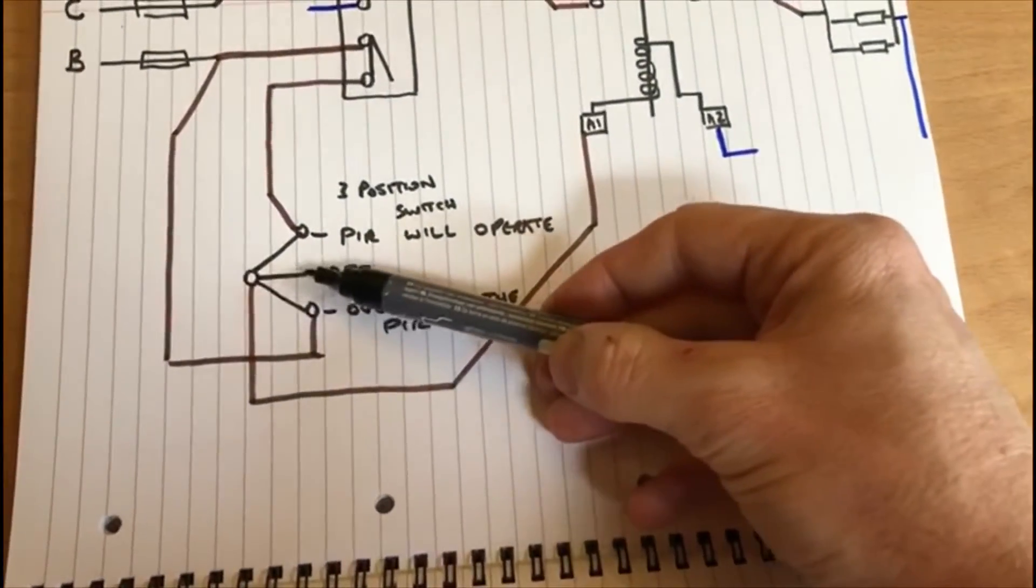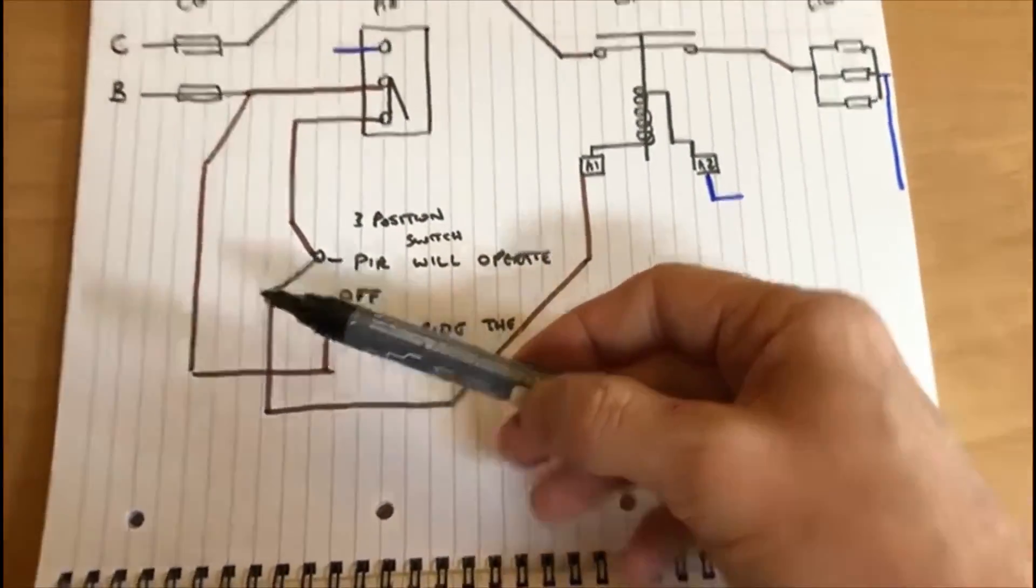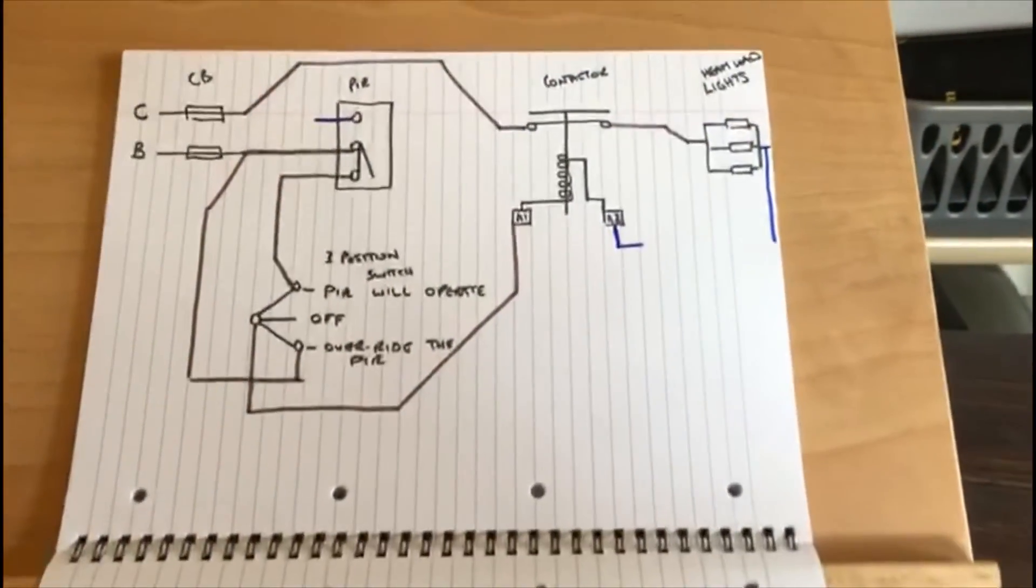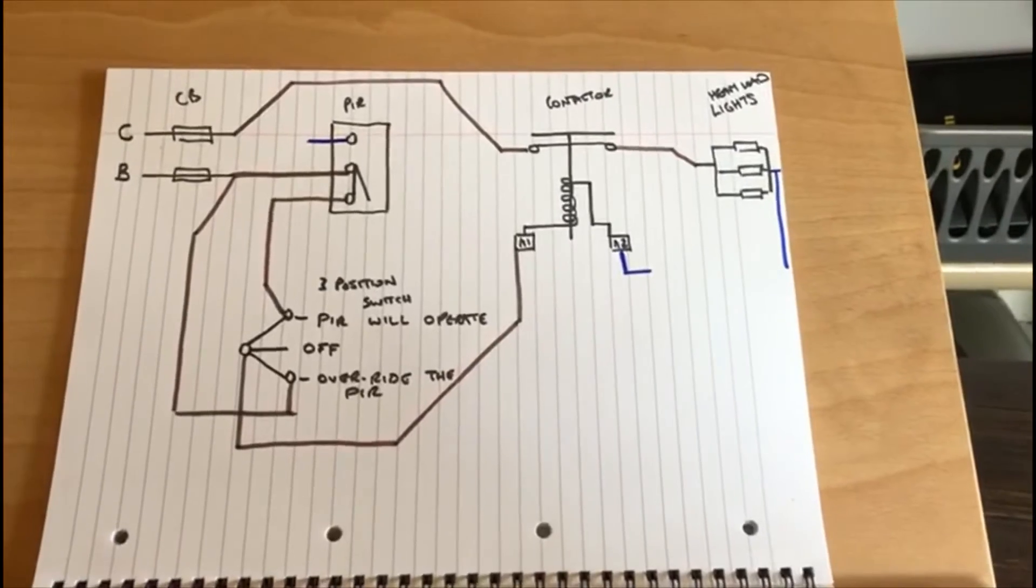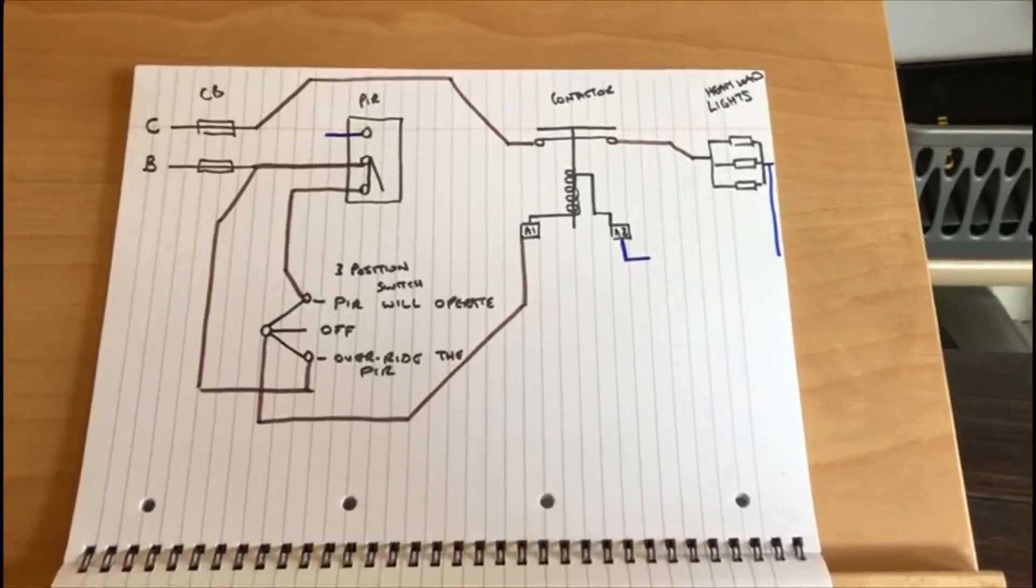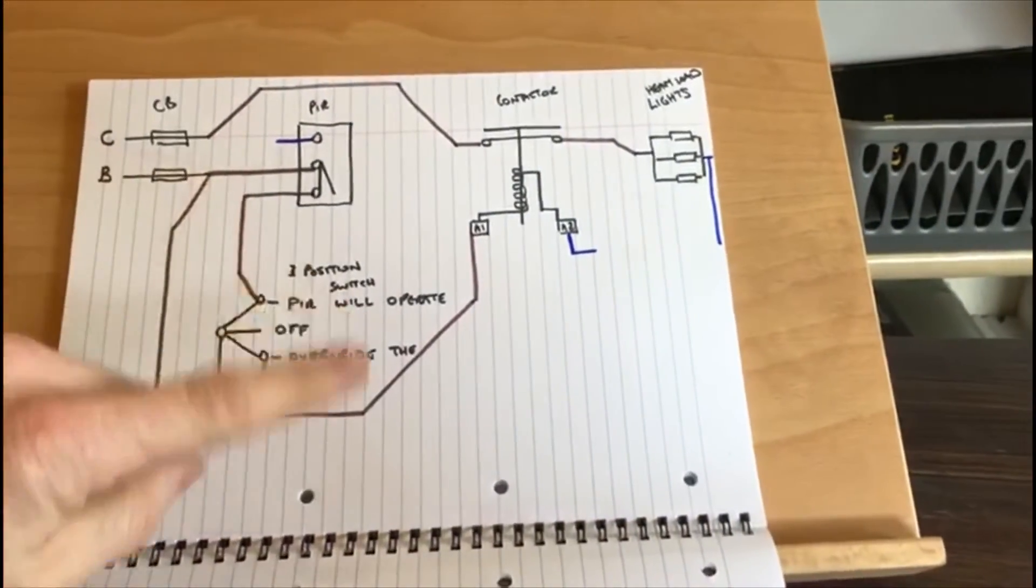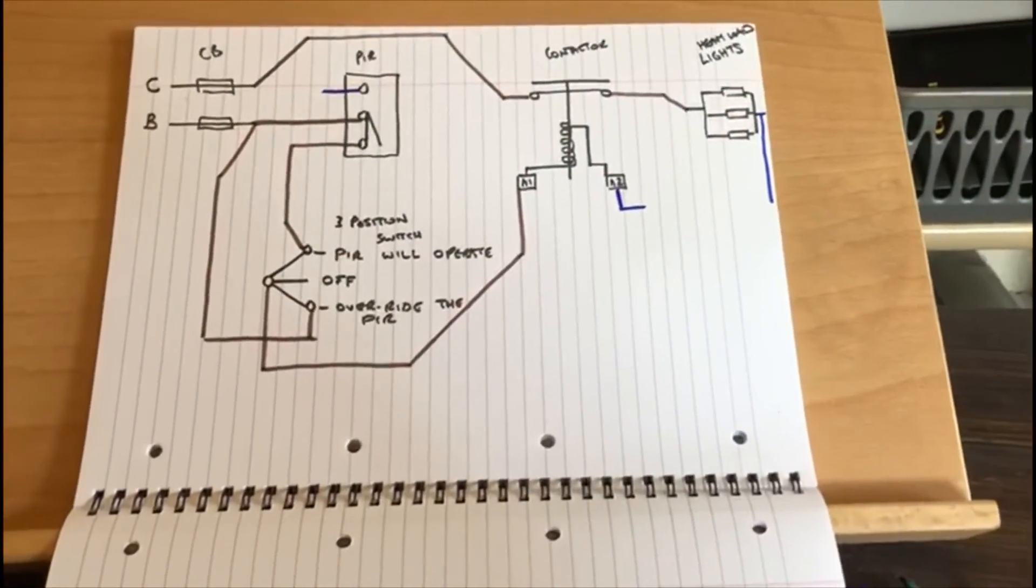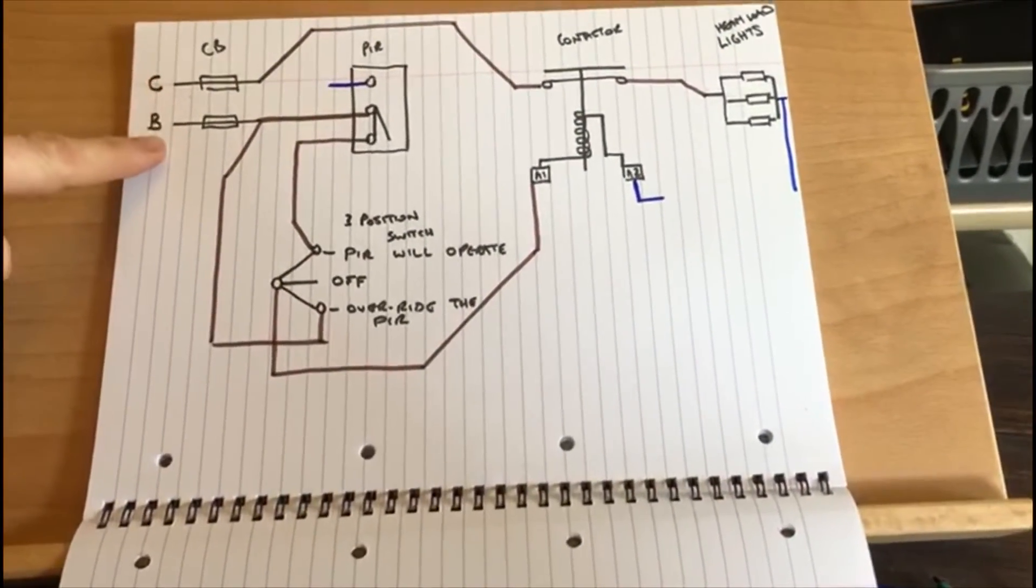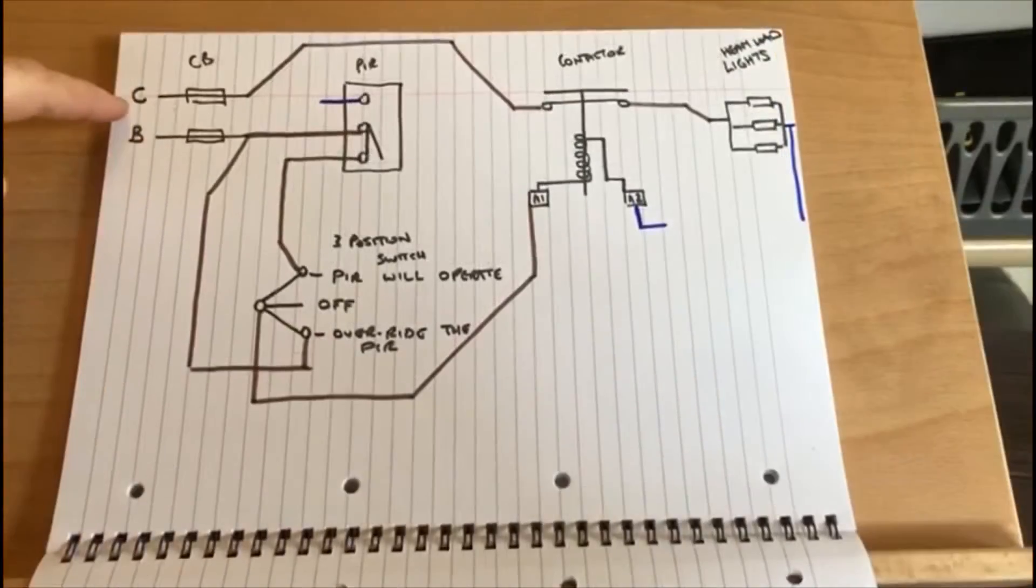So again that's the use of a three position switch which is quite common in industry, at least using the PIR, the contactor and a three position switch. In this case we've got the two types of circuit breakers, a C type and a B type. They need to be labeled in such a way that they know they are both for the same lighting circuit.